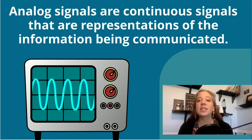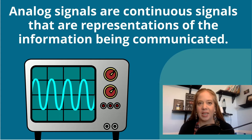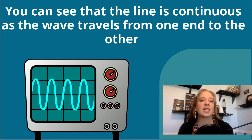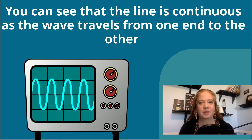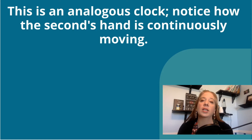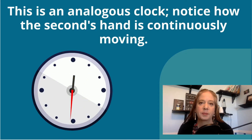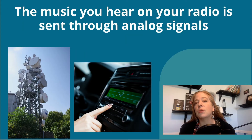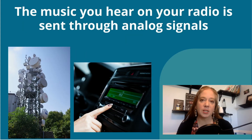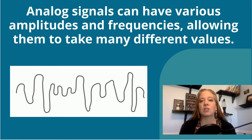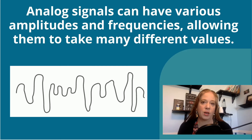Analog signals are continuous signals that are representations of the information being communicated. You can see that the line is continuous as the wave travels from one end to the other. This is an analogous clock — notice how the seconds hand is continuously moving. The music you hear on your radio is sent through analog signals. Analog signals can have various amplitudes and frequencies, allowing them to take many different values.